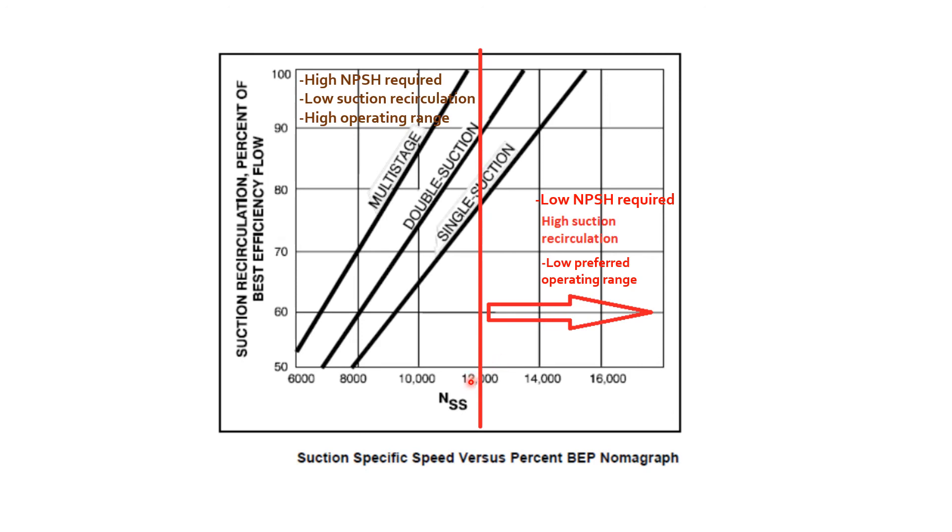In industry, there is a recommended parameter that pump suction specific speed should not exceed 12,000 NSS. Why is this set in the industry standard? This can be explained through a chart showing the relationship between NSS versus percent best efficiency point.